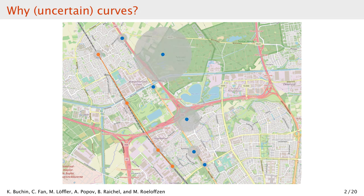In addition to the measurement location, collected data includes an accuracy estimate, represented as a disk of a certain radius. It is feasible that at the time of measurement the object really was anywhere inside the disk. If we take this information into account, this simple straight-line trajectory is feasible. We can see that it will give a very different result than the polygonal curve on the measurement points. So it is important to take uncertainty into account.